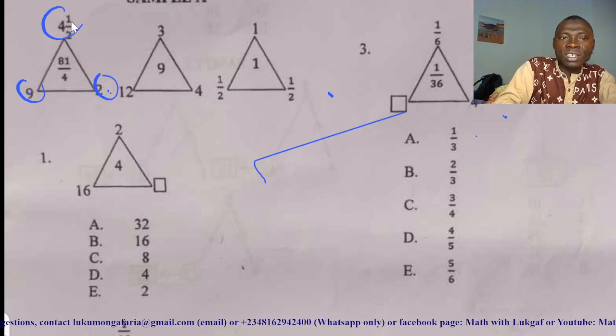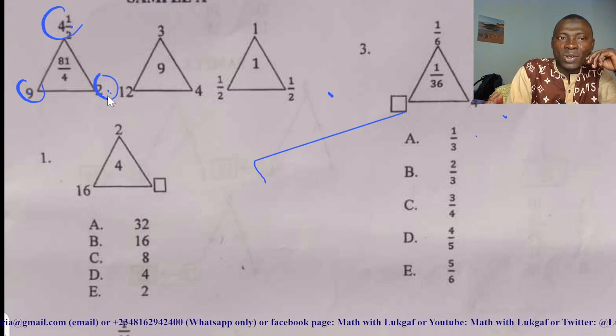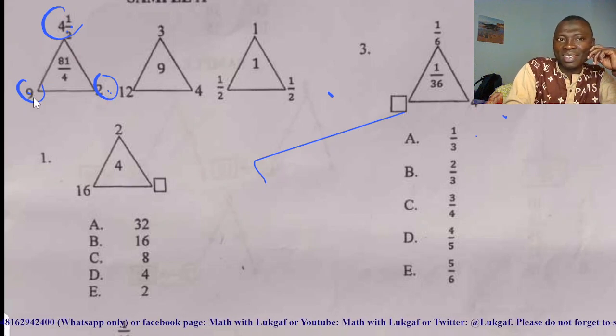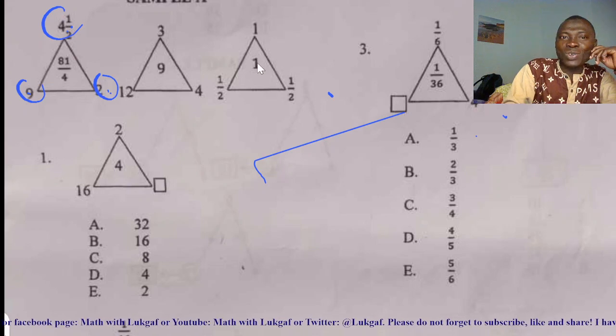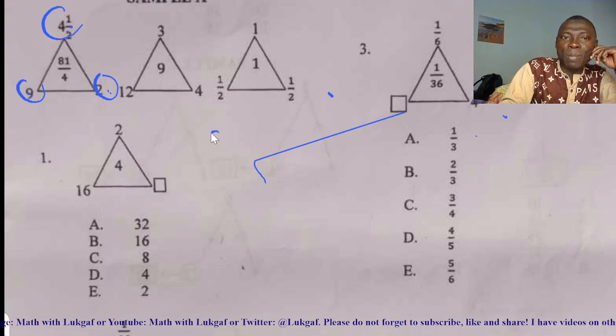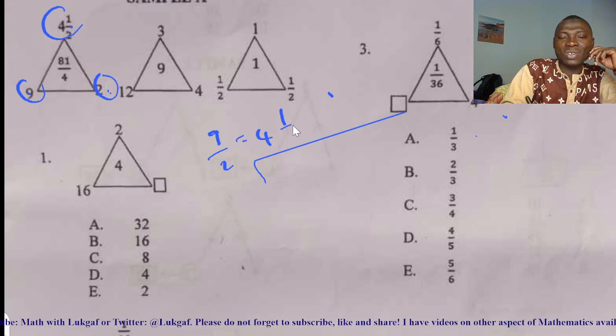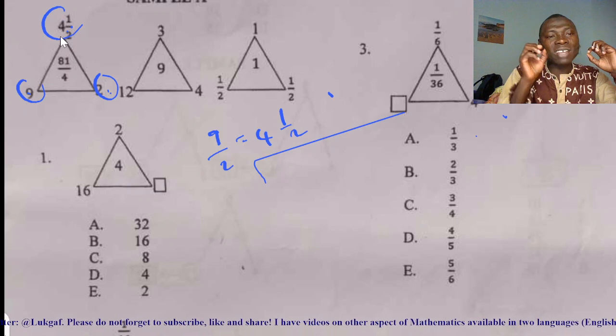Let us think about it. If I say 9 divided by 2, some people might be saying that. Yes, you might be correct. 9 divided by 2, you know, is an improper fraction that is 4 remainder 1 divided by 2. We've been able to establish that the two numbers at the bottom, when you divide them, you are going to have it at the top.